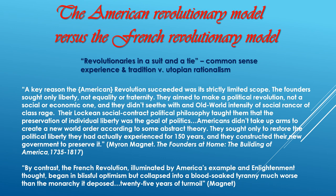A recent book states: 'A key reason the American Revolution succeeded was its strictly limited scope. The founders sought only liberty, not equality or fraternity. They aimed to make a political revolution, not a social or economic one, and they didn't seethe with old world intensity of social rancor and class rage. Their Lockean social contract political philosophy taught them that the preservation of individual liberty was the goal of politics. Americans didn't take up arms to create a new world order according to some abstract theory. They sought only to restore the political liberty they had actually experienced for 150 years as colonies of the British, and they constructed their new government to preserve it.'